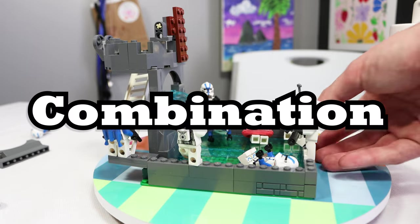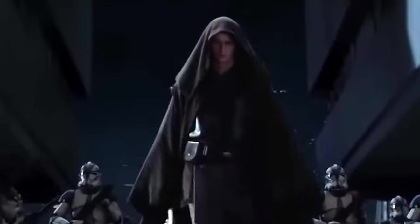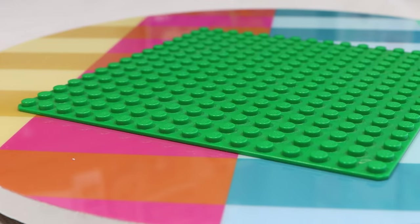First combination, we're going to be making a LEGO pool for our 501st clone troopers who are going on vacation to Coruscant in a few weeks. I don't know why though. So to start our pool off, we're going to grab a 16x16 plate.